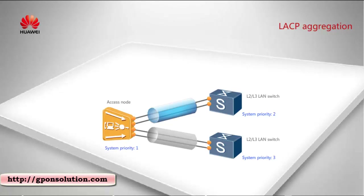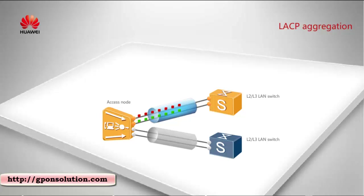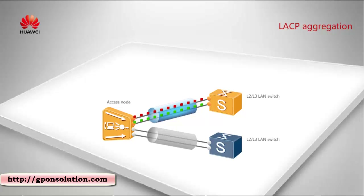After such configurations, the access device with the highest priority is selected as the actor among the interconnected devices. The actor will determine the active upper layer devices according to priorities of the ports on the access device, for example, priority 1, 2, 3, or 4, where a smaller value also indicates a higher priority. After the devices on both link ends are configured, the two interconnected devices will transmit packets through the links. The aggregation group of the active upper layer device carries services, while the links in the aggregation group of the standby upper layer device are blocked and do not carry services.